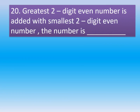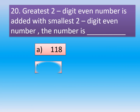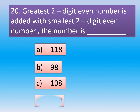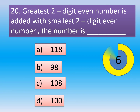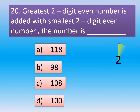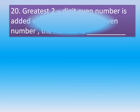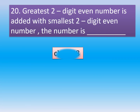Question number 20. Greatest 2-digit even number is added with smallest 2-digit even number. The number is: Option A: 118. Option B: 98. Option C: 108. Option D: 100. The correct option is Option C: 108.